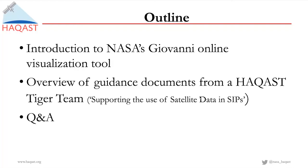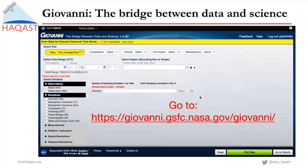It's a great pleasure for me to introduce Giovanni. Giovanni is an online visualization tool which can be used to visualize satellite data. I think maybe most of the audience today are interested in using satellite data, but a question you may have is how we can access and analyze satellite data. Giovanni is really the tool that could allow us to easily visualize satellite data. Here I'm showing you the interface of Giovanni.